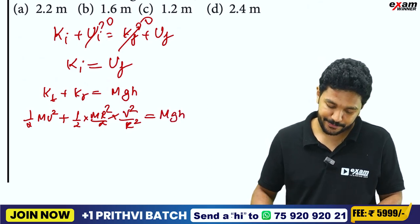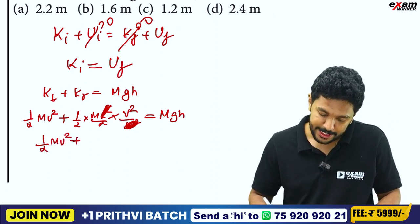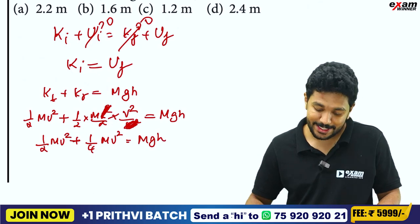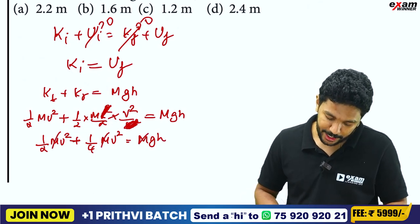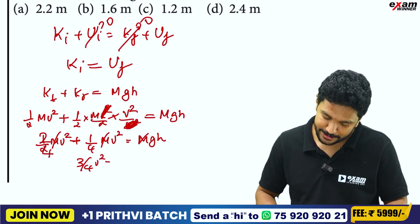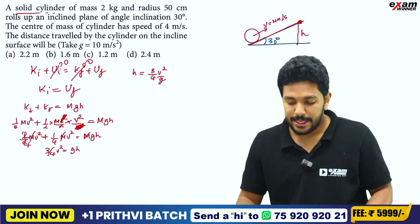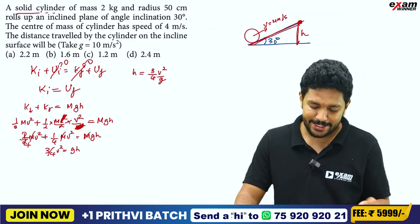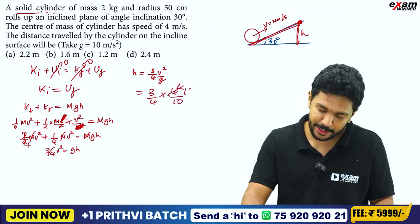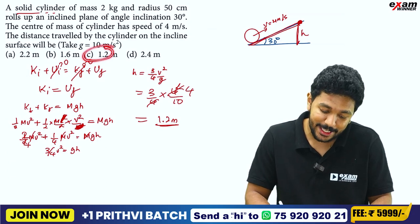This equals mgh. The r squared terms cancel, giving: half mv squared plus one-quarter mv squared equals mgh. So three-quarters mv squared equals mgh. Therefore height h equals 3v squared by 4g. Substituting v equals 4 m/s and g equals 10: h equals 3 times 16 divided by 4 times 10, which gives h equal to 1.2 meters.